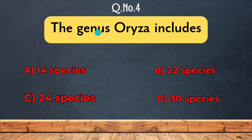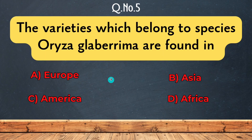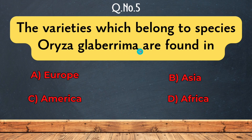Question 4: The genus Oryza includes — 14 species, 24 species, 30 species, or 22 species. The correct answer is 24 species. Question 5: The varieties belonging to species Oryza glaberrima are found in Europe, America, Asia and Africa.